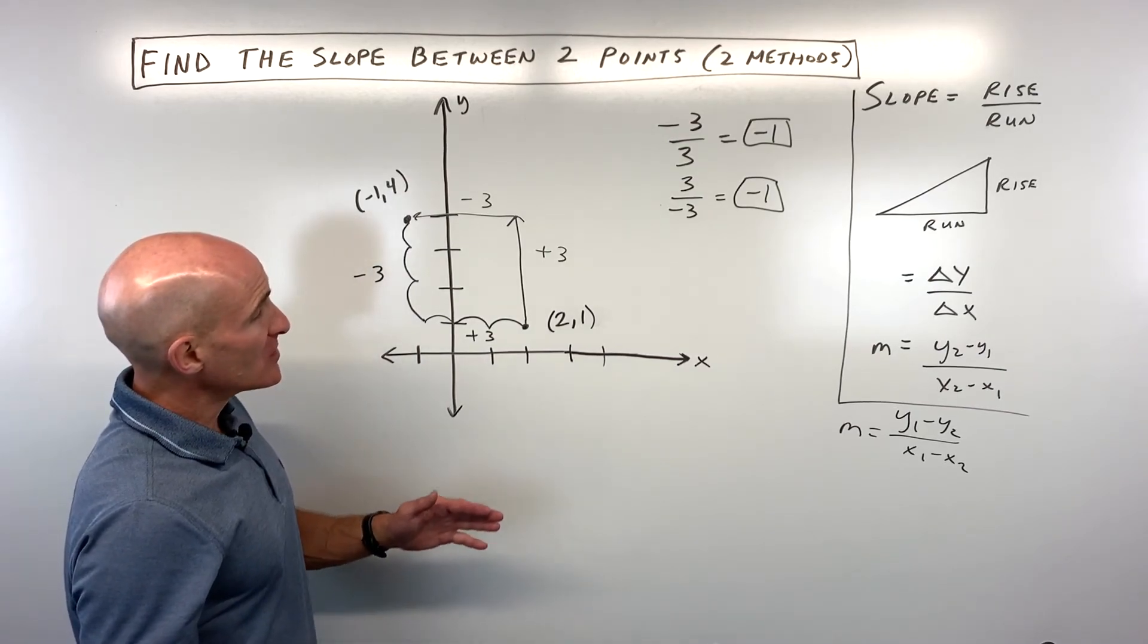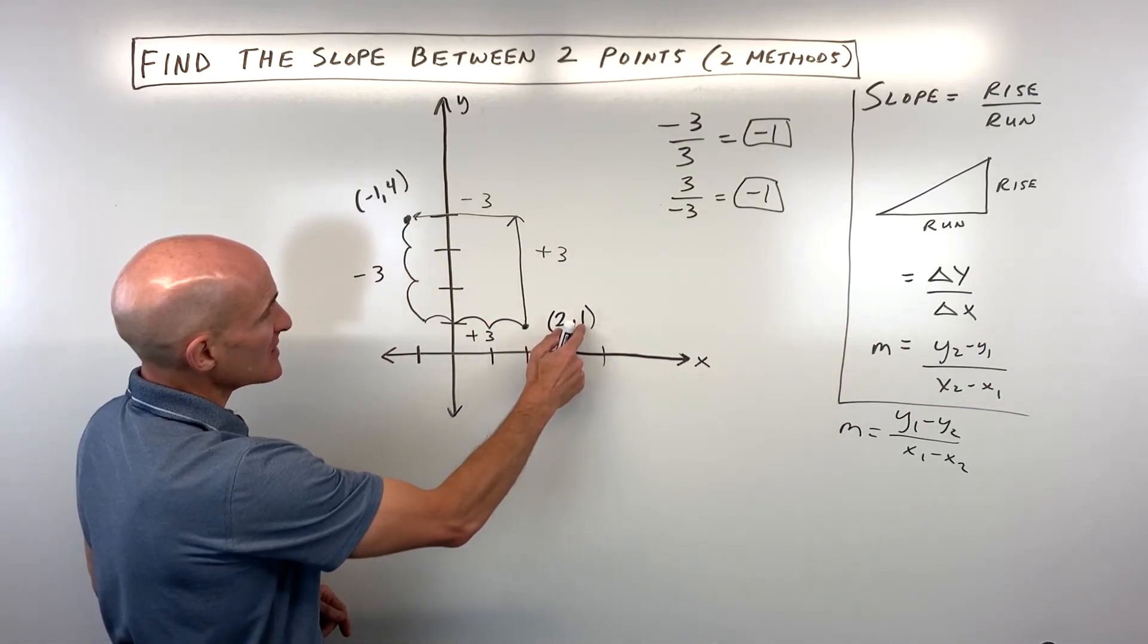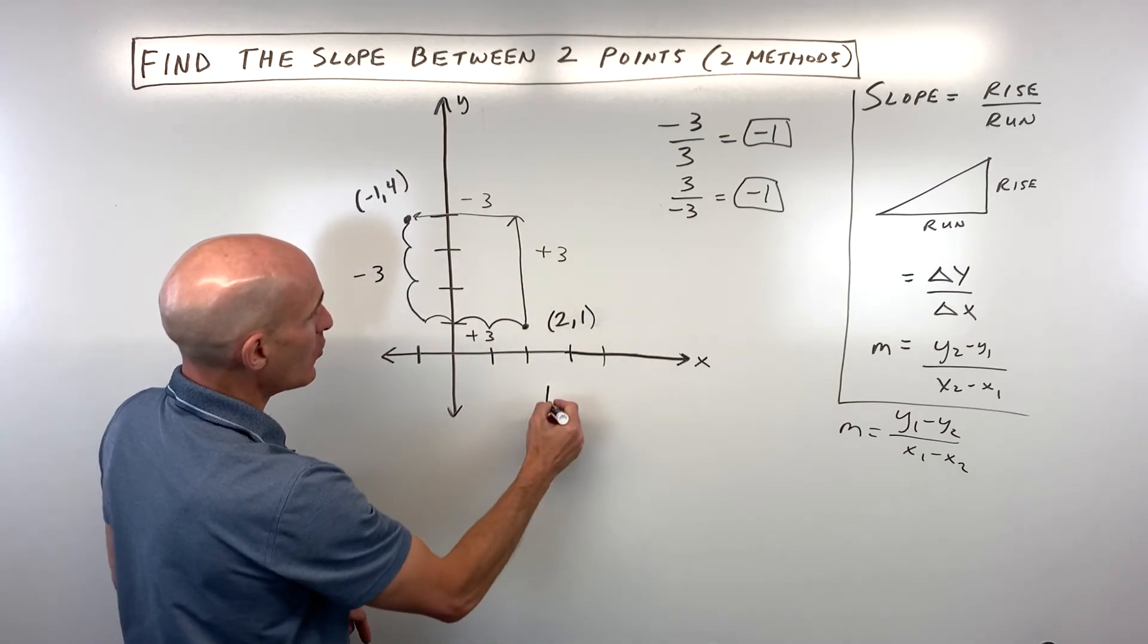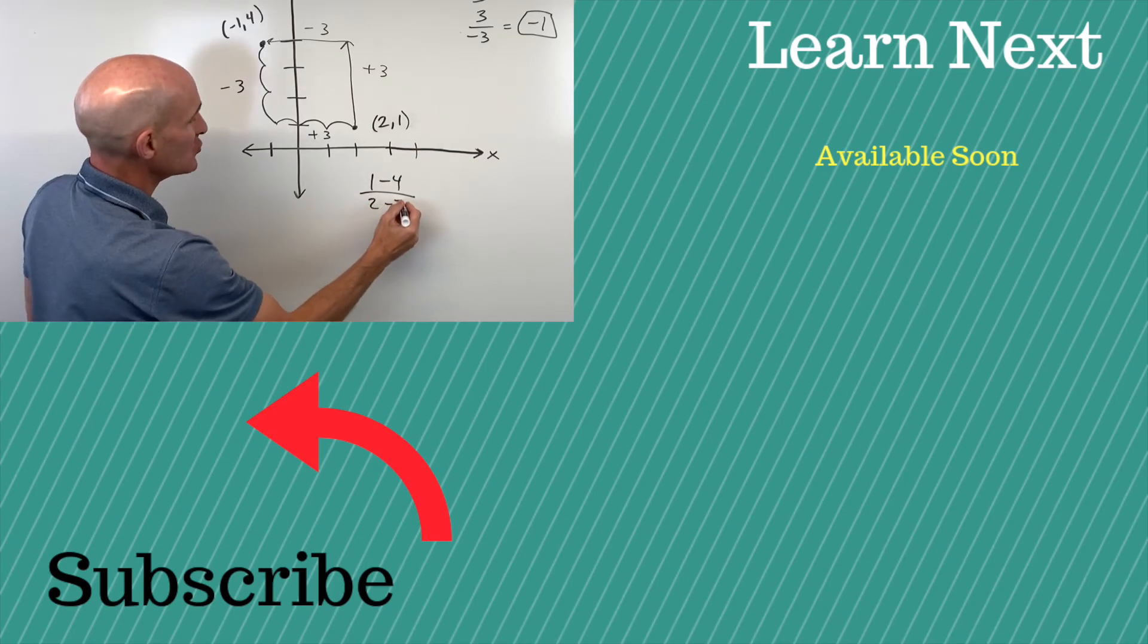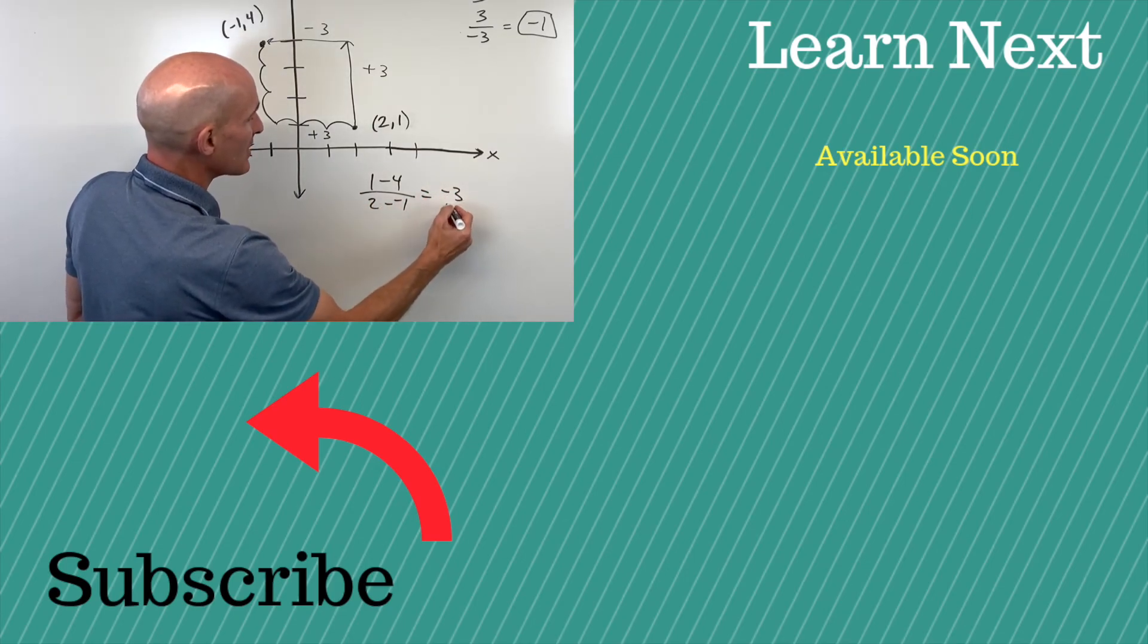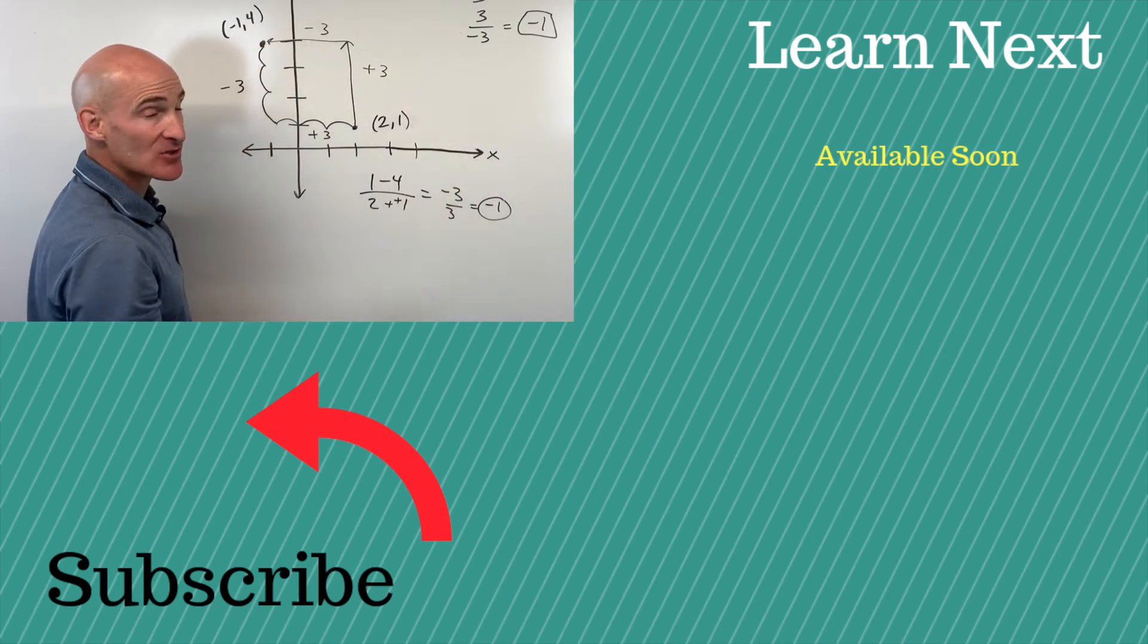The other way to do this is to use our slope formula. What I'm going to do is I'm going to say y minus y. So 1 minus 4 over x minus x. That's 2 minus negative 1. That comes out to negative 3 over positive 3, which is negative 1. Same answer.